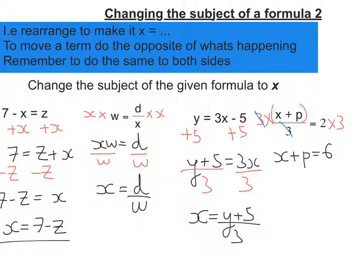And now I've got the x out of the fraction, and it's been added to by p. So to move the p, I do the opposite, which is take away p. So I'm left with x is equal to 6 minus p, and that's my answer.